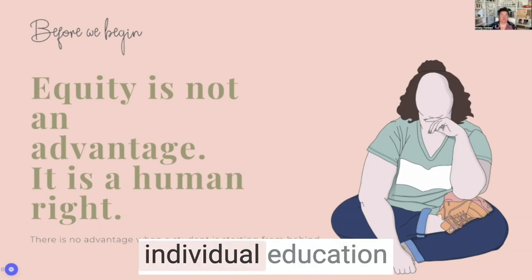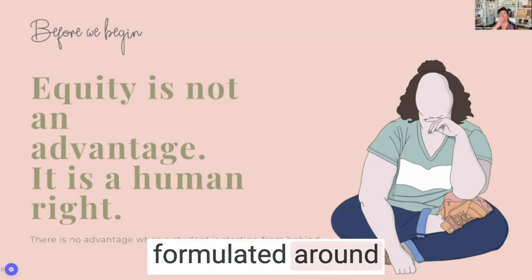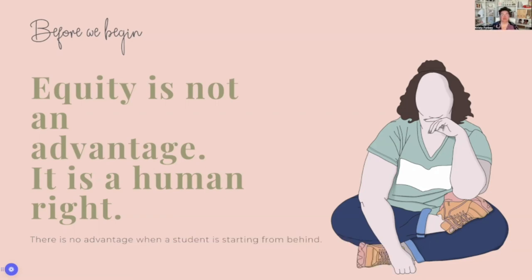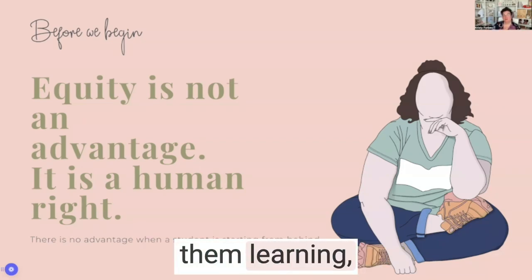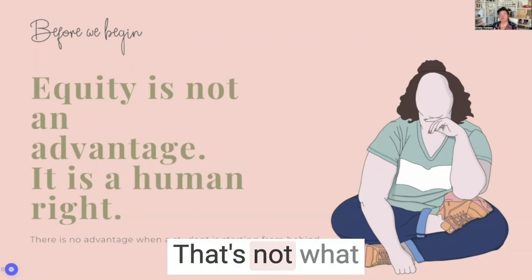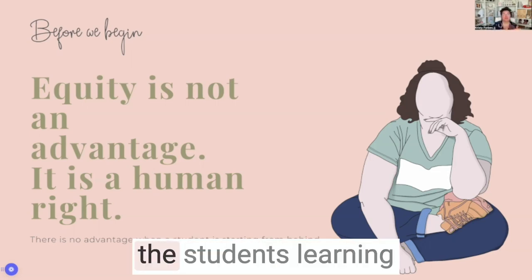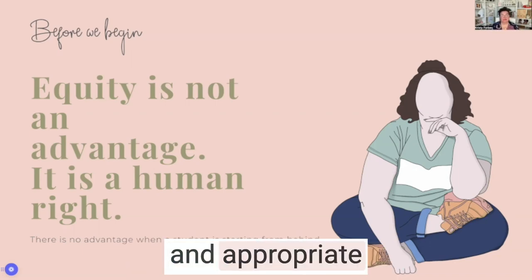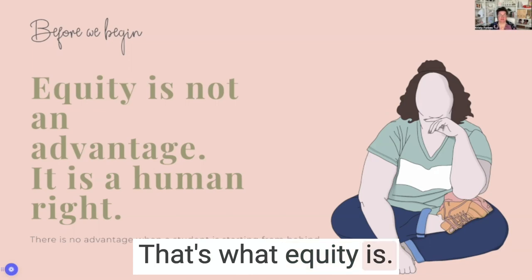It's important to know that when we are building an IEP — an individual education plan — the goals should never be formulated around having the student become normalized. The goals are not to take this neurodivergent individual and have them learning, behaving, and living as a typical person. It's about looking at the student's learning pathways, their needs, and appropriate accommodations — figuring out how they can access the same education in a different way. That's what equity is.